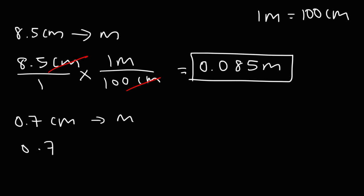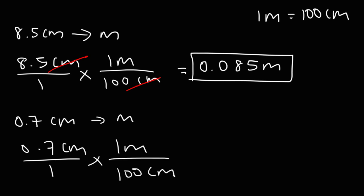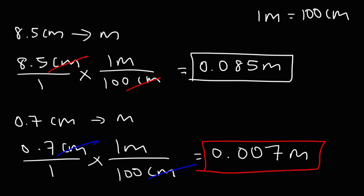For the next one, let's follow the same pattern and multiply 0.7 centimeters by 1 meter over 100 centimeters. So 0.7 divided by 100 is going to be 0.007 meters. And that's it for this video — now you know how to convert from meters to centimeters and centimeters to meters.